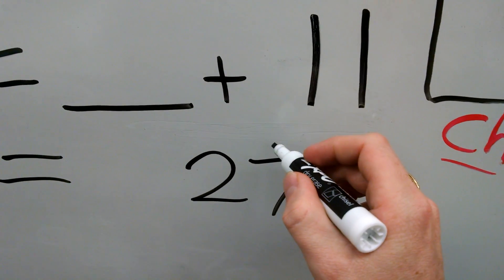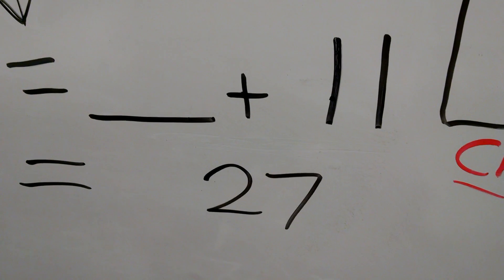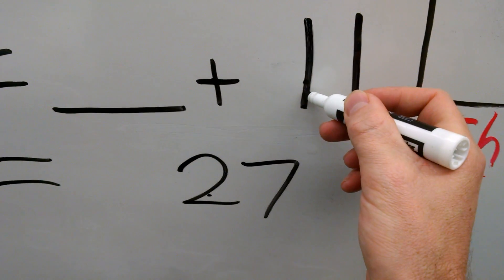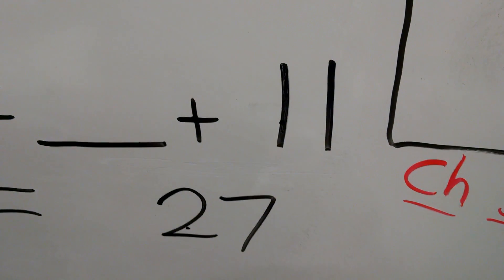Now we have to stop and think about this. That 11 plus something is going to give us that 27. So we have to figure out, 11 plus what is going to give us 27.